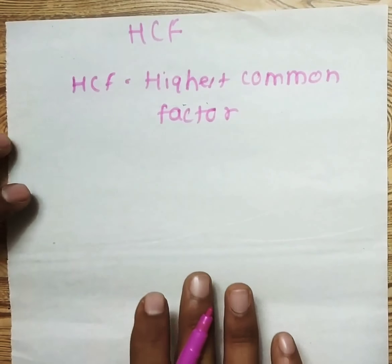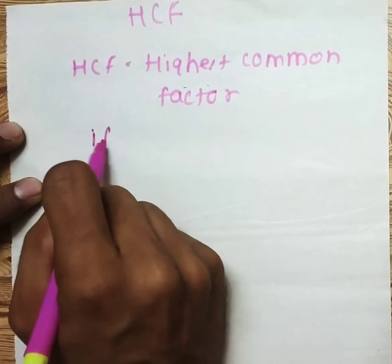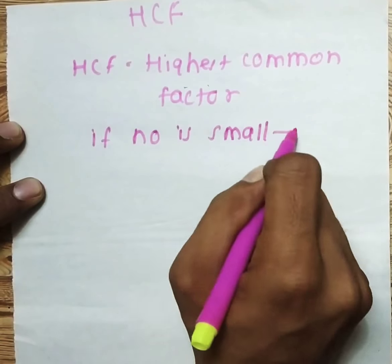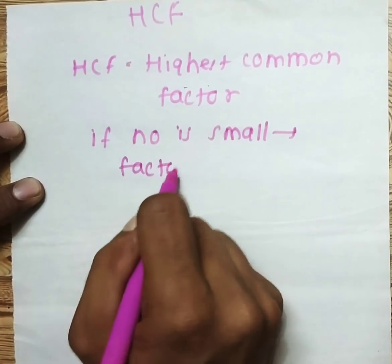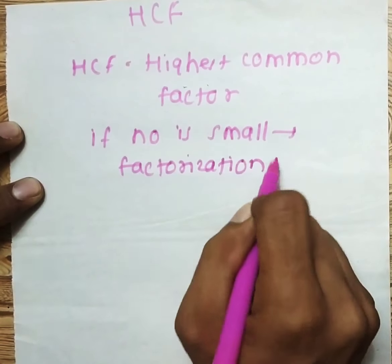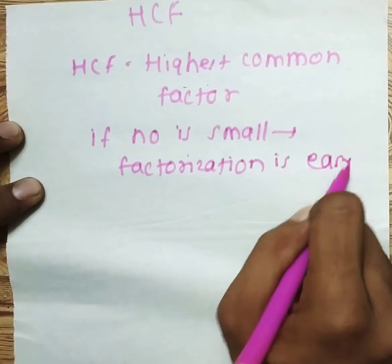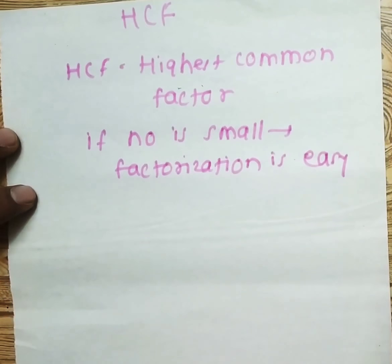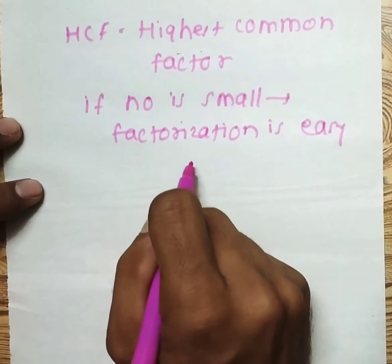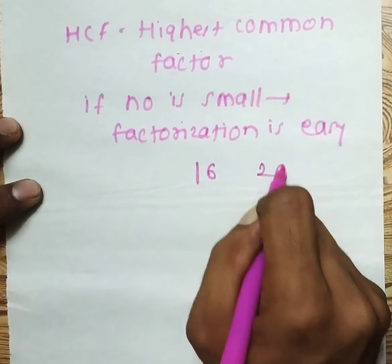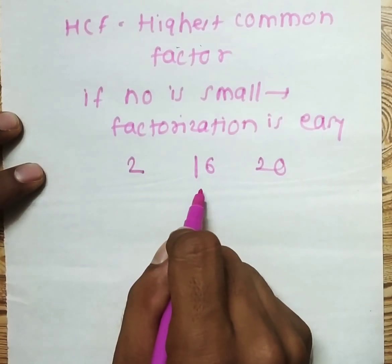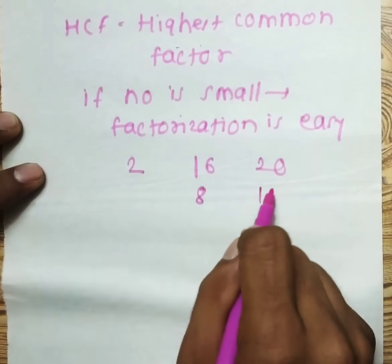In HCF, always remember: if the number is small, factorization is easy. For example, if the two numbers are 16 and 20, we know the common factor is 2. So 2 eights are 16, and 2 tens are 20.